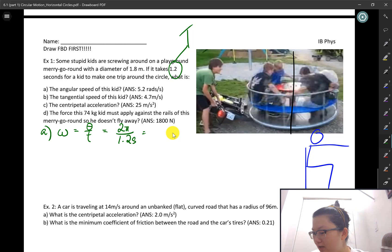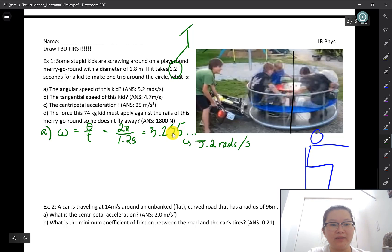We put this into our calculator: 2 times π divided by 1.2, that's gonna give us 5.235, and that's gonna round up to two sig figs which is 5.2. The units of this one, the top is in radians, so we use rads, radians over seconds. Awesome.